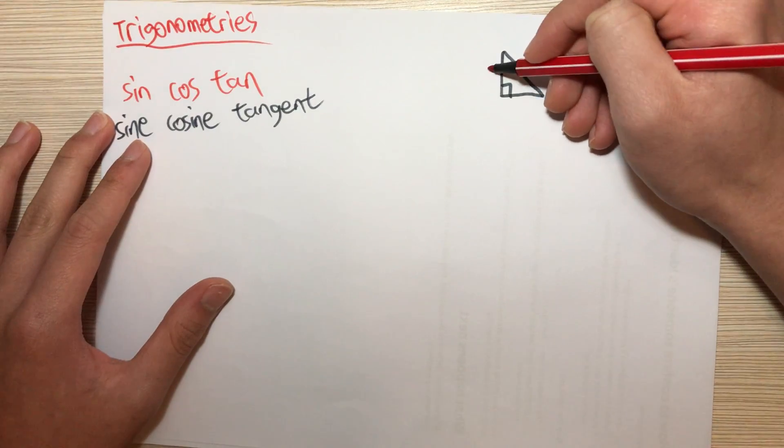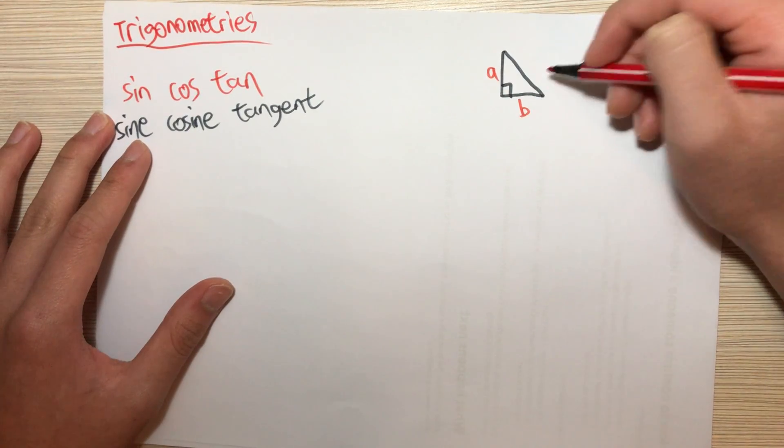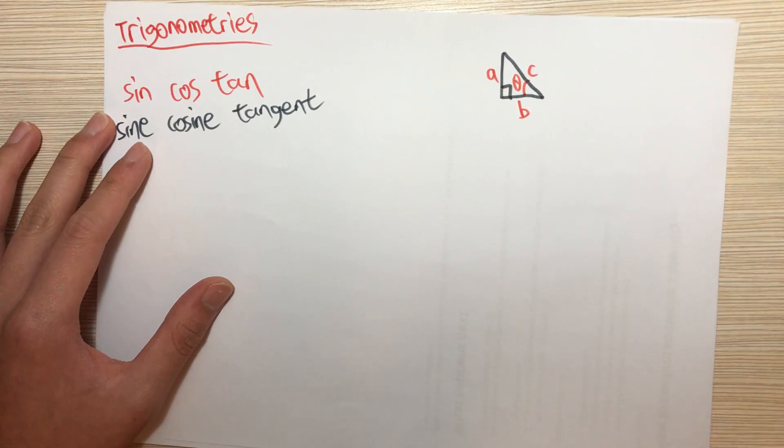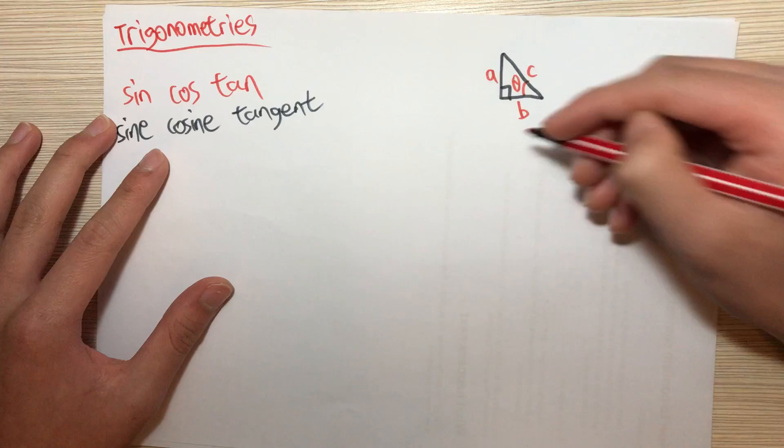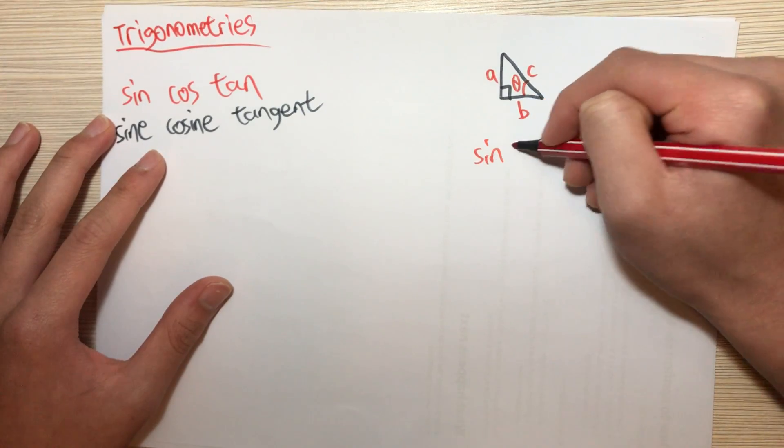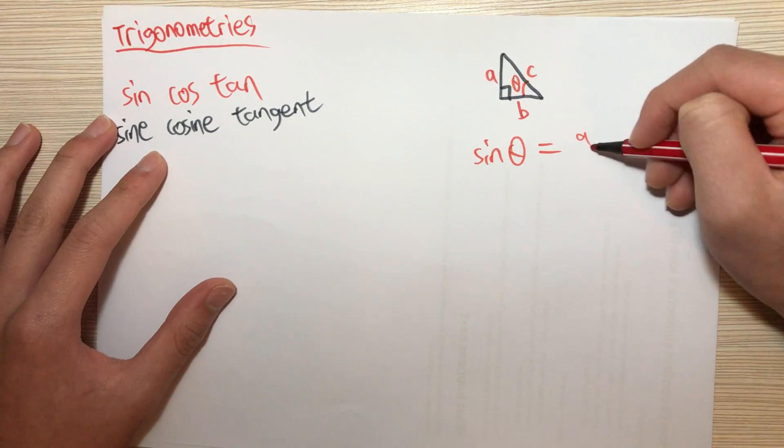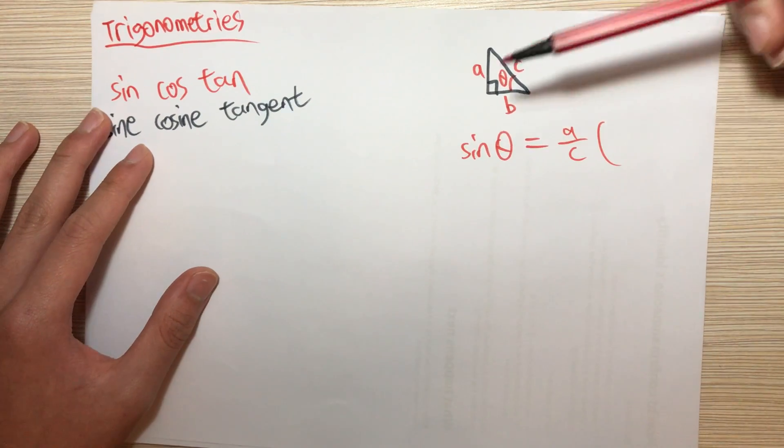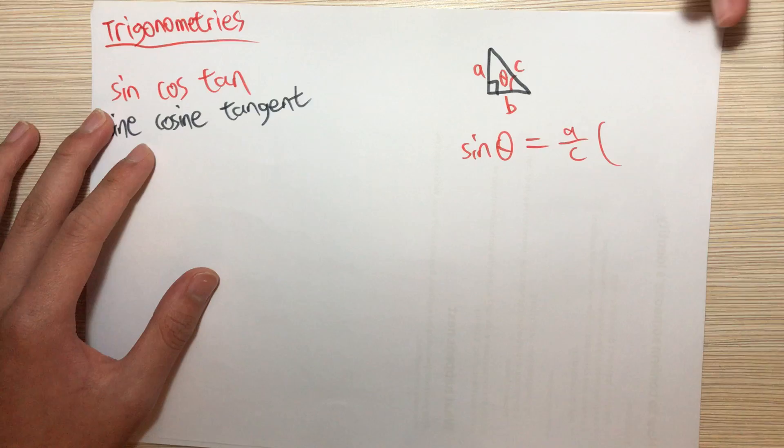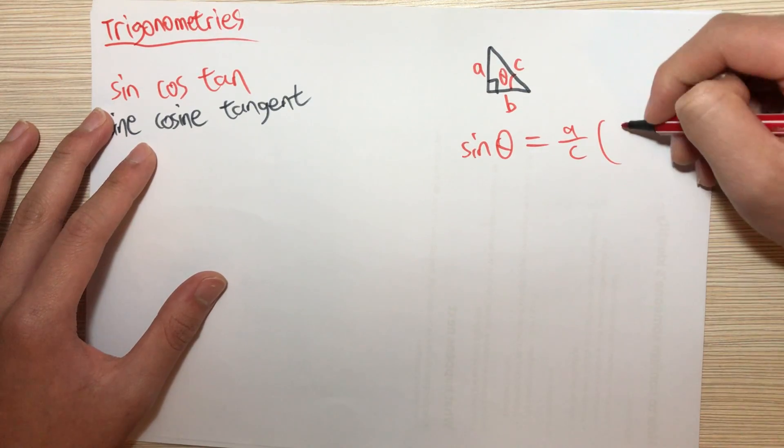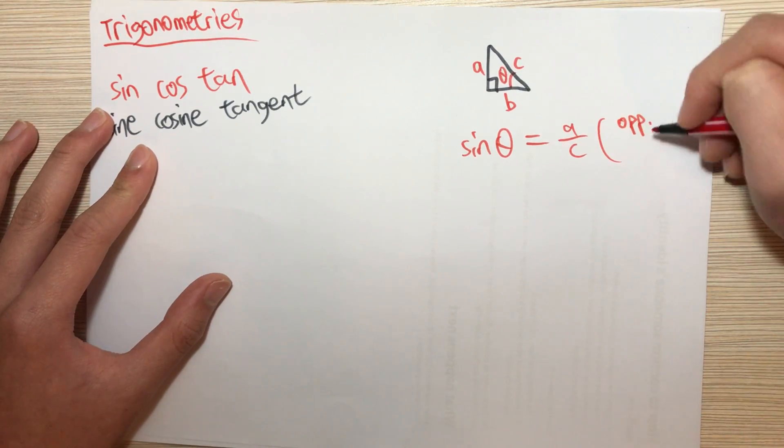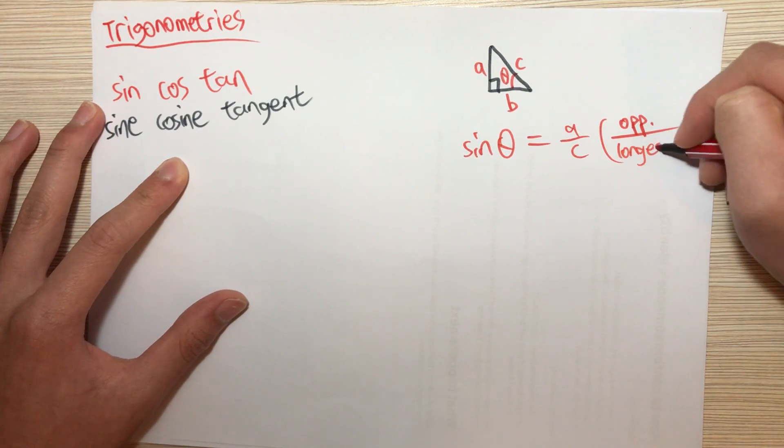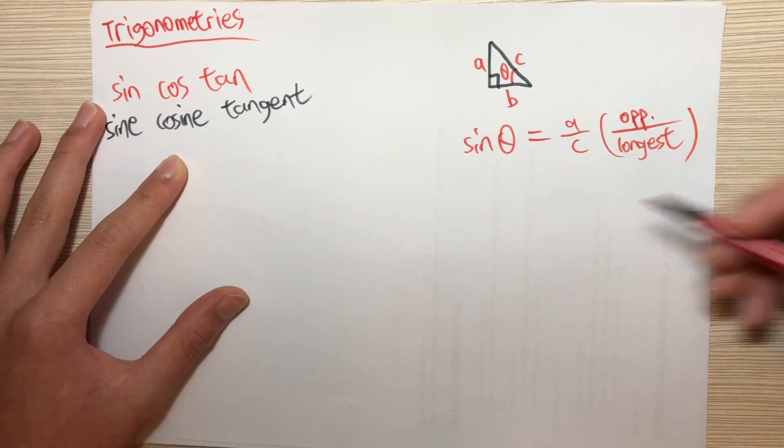Let's name this angle, this line A, this line B, and the hypotenuse C, and we also have a theta. Now what is sine theta? It is just equal to A over C. Remember, sine theta is the line opposite to the angle, the opposite side, divided by the longest side of the triangle.